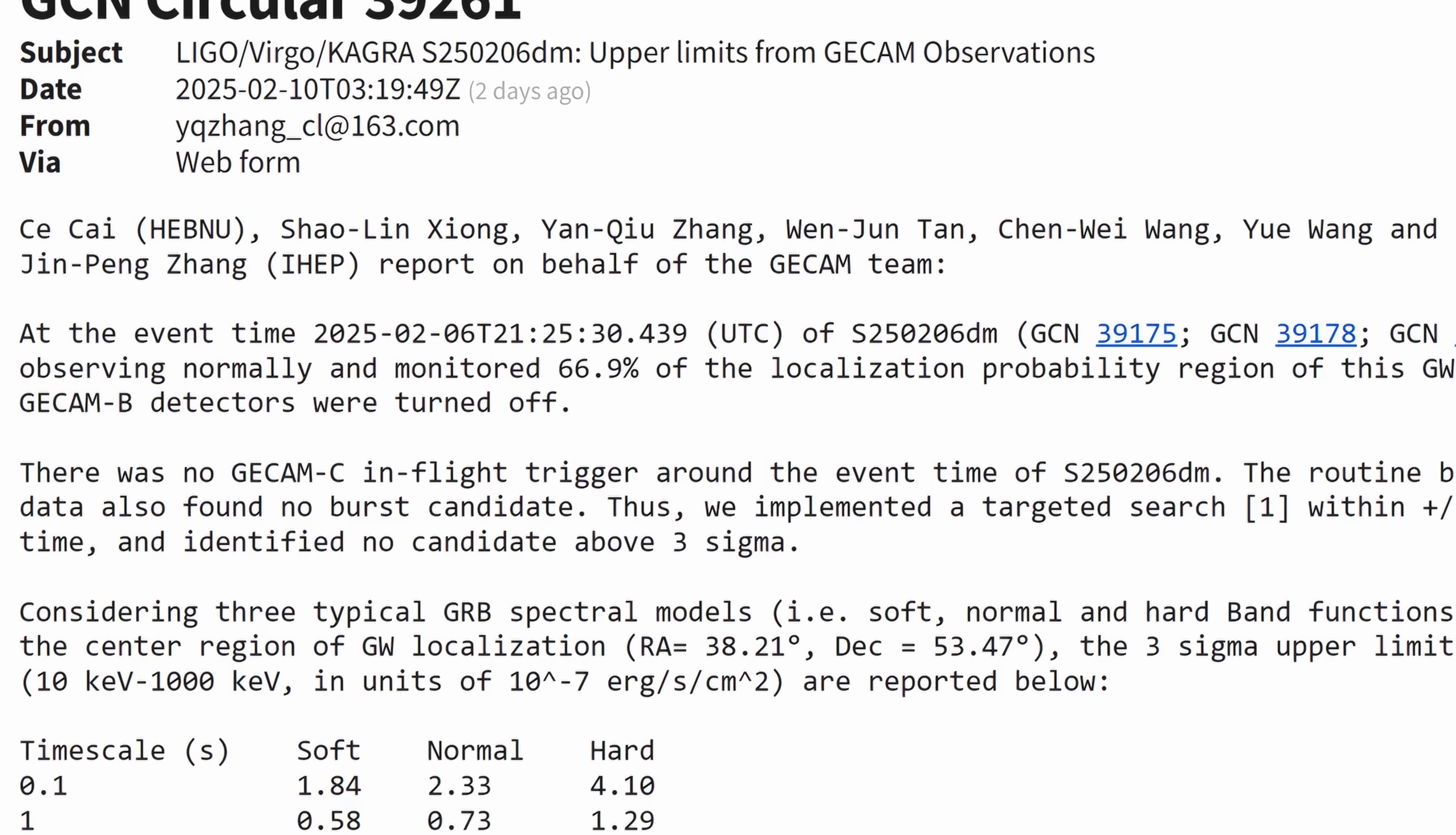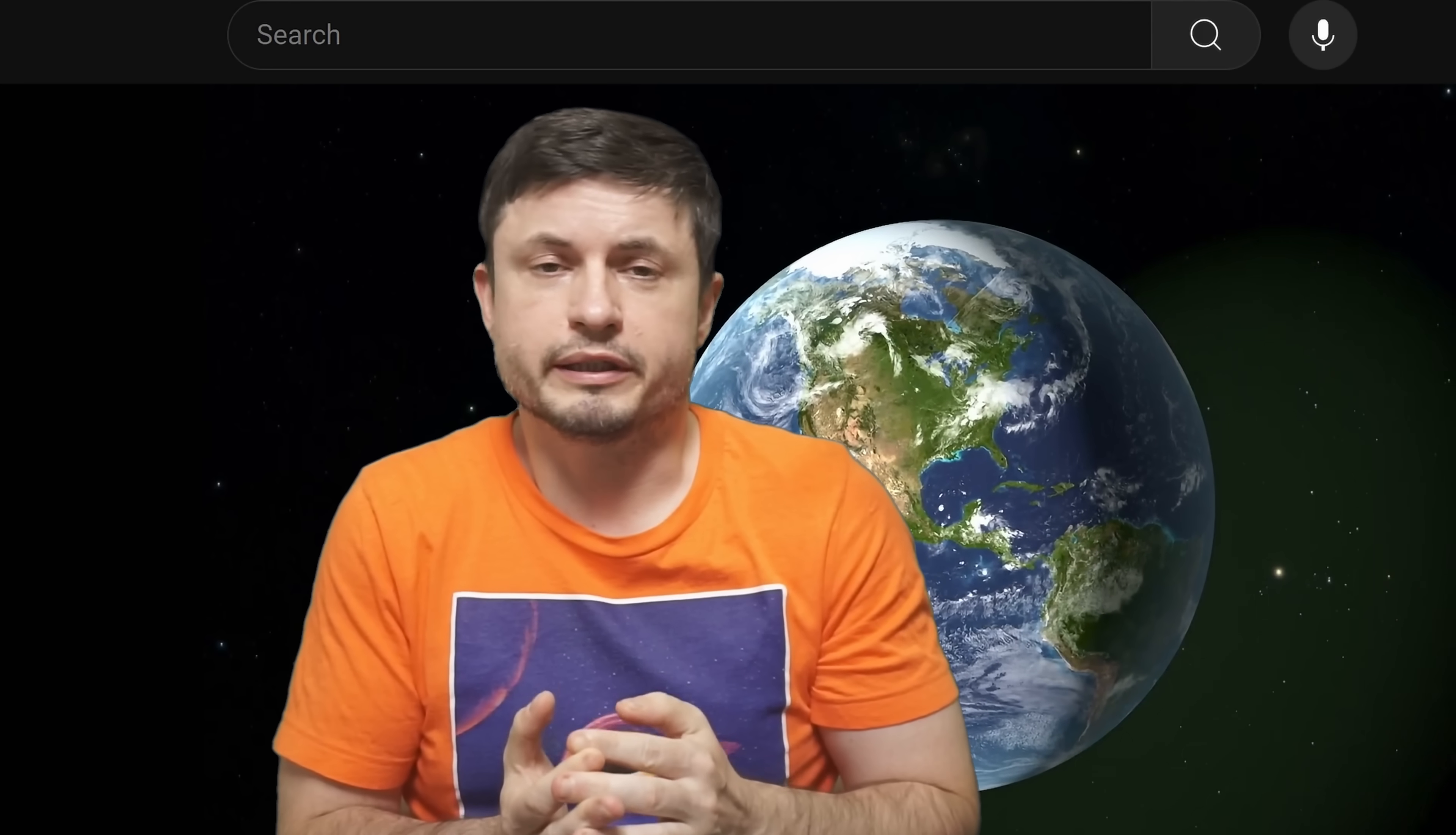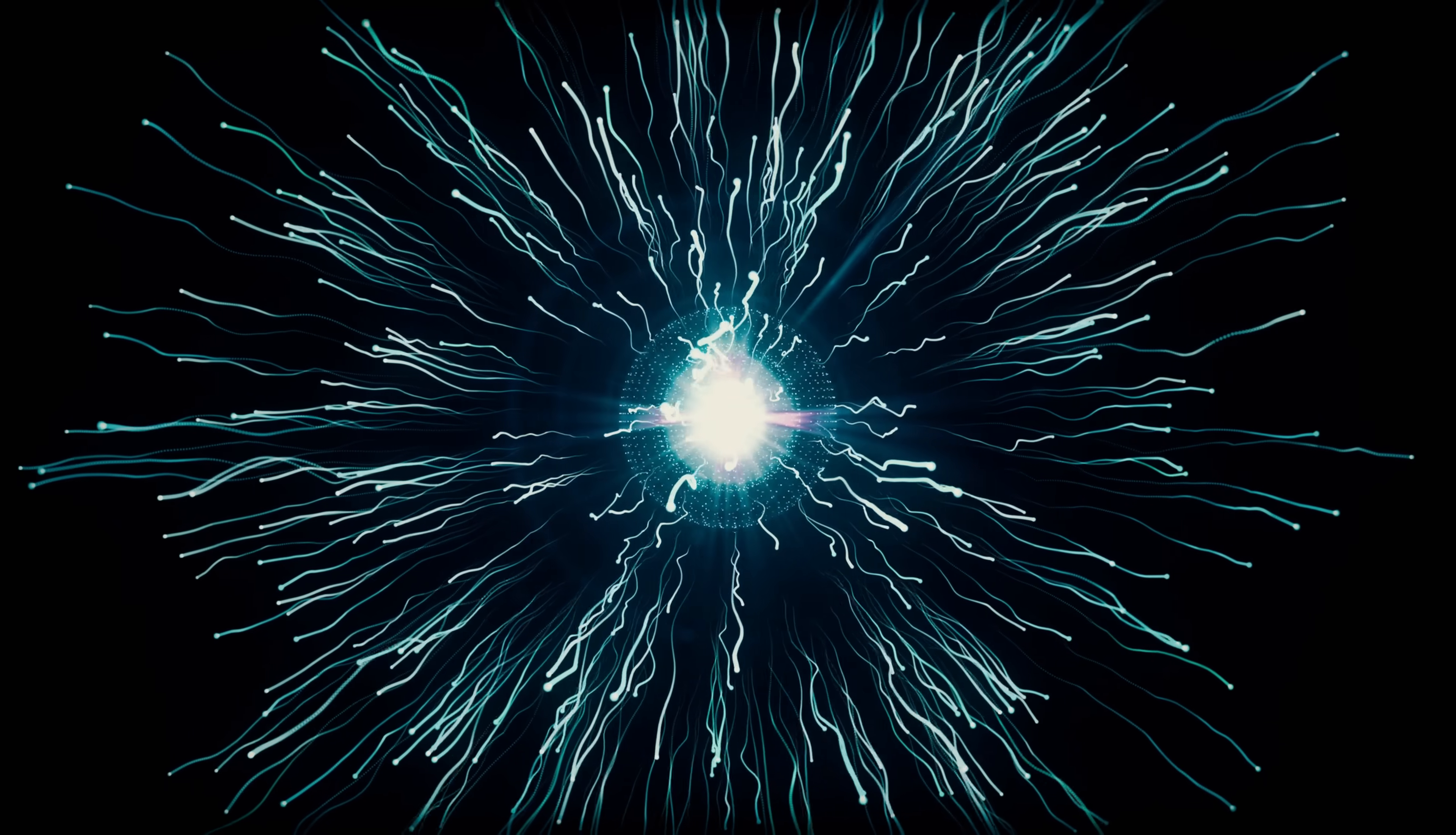And it turns out that there was a detection of neutrinos coming from this location within approximately five minutes after the initial gravitational waves have passed. Which makes this a super exciting event, because this is the first time ever we've actually connected physical particles, in this case neutrinos, to a spacetime disturbance such as a gravitational wave. This has never been seen before and this is sort of groundbreaking for cosmology.